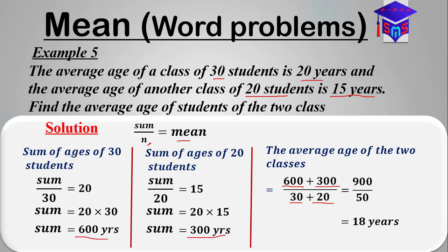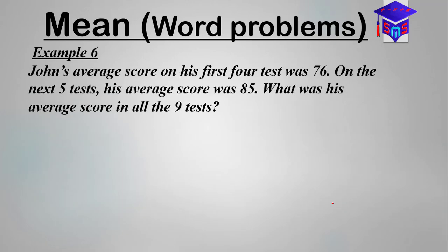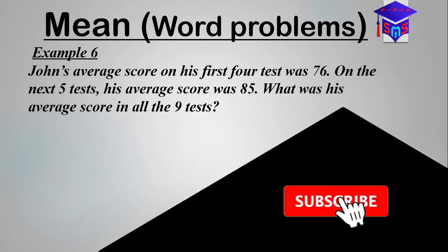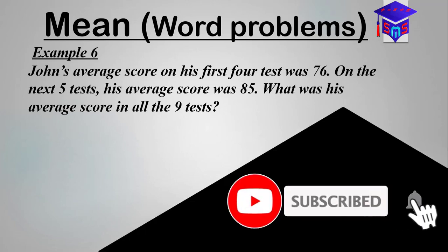Thank you very much for watching and stay tuned. In the next video we'll be looking at this question: Jones' average score on his first four tests was 76, and on the next five tests his average score was 85. What was his average score on all nine tests? You don't want to miss this — stay tuned.